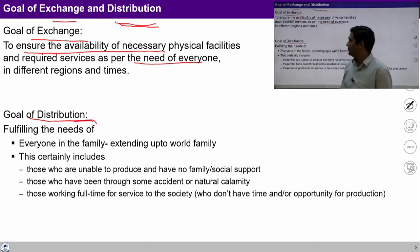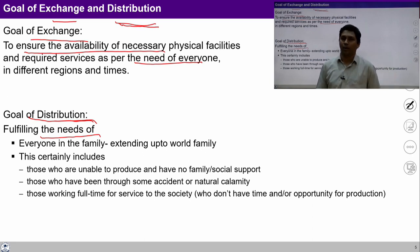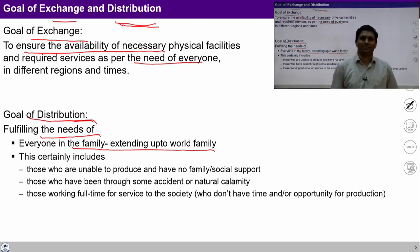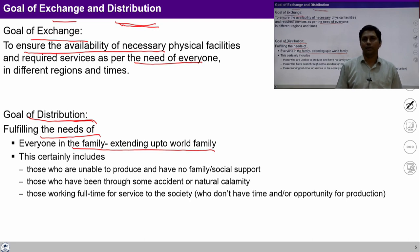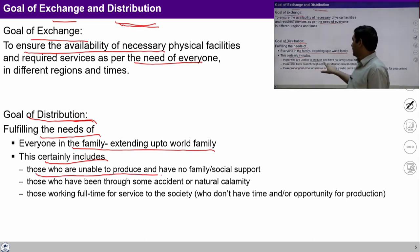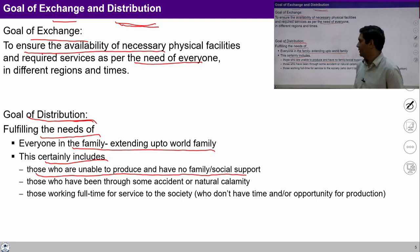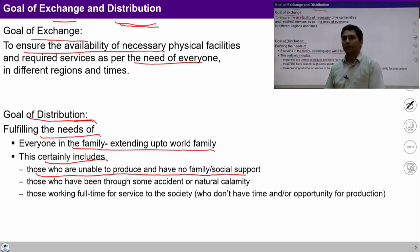Similarly, the goal of distribution is fulfilling the needs of everyone in the society, because we are talking about family to world family order. In a humane society we are talking about this family to world family order and ensuring harmony from family to world family. This includes many things — for example, there are many people in the society and family who are unable to produce, like old people, children, and deprived people.